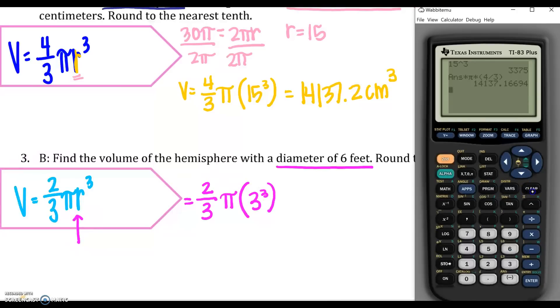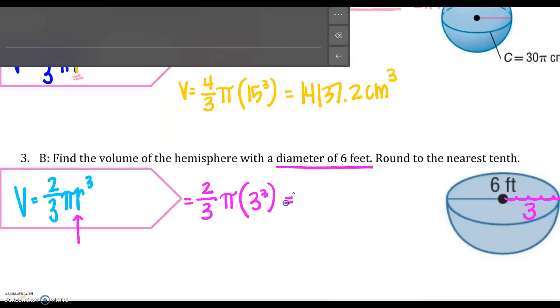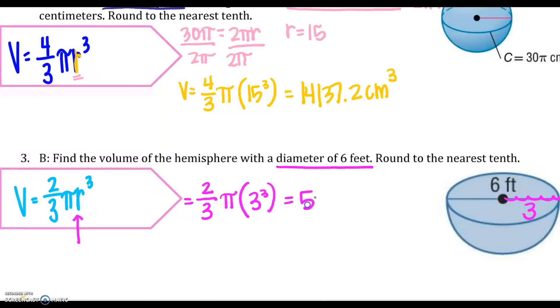Just again, how do we do that? I'm going to do 3 caret 3. So that's 3 raised to the third. Times π. Times, and I'm going to put 2/3 in these parentheses. You may do it a different way. So my answer is 56.5 feet cubed.